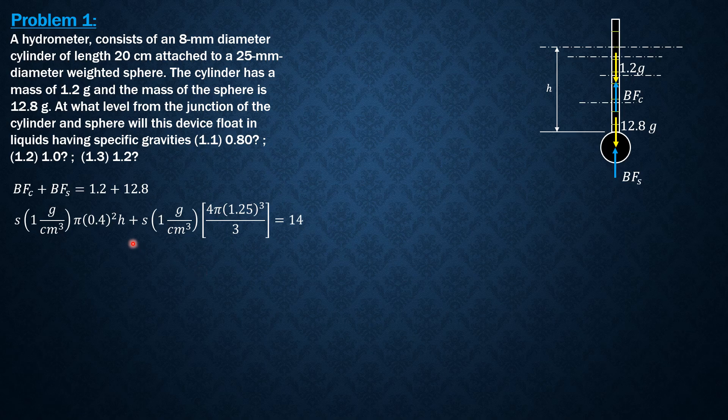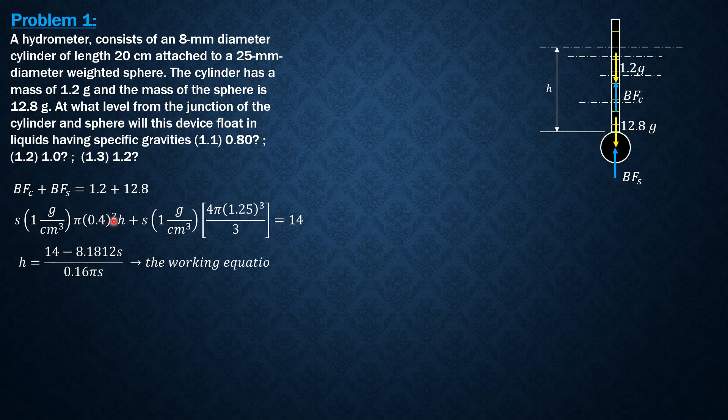So expressing h in terms of the other terms, the working equation for h is 14 minus this value here in terms of s, which is 8.1812s, divided by 0.16 π s. So that's the working equation.